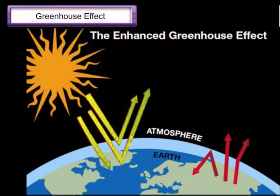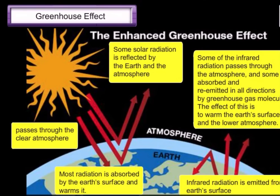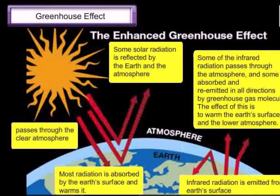The greenhouse effect is the rising in temperature that the earth experiences because certain gases in the atmosphere, like carbon dioxide and methane, trap energy from the sun. Without these gases, heat would escape back into space and the earth's average temperature would be about 60 degrees Fahrenheit colder. Because these gases warm the earth, they are referred to as greenhouse gases.